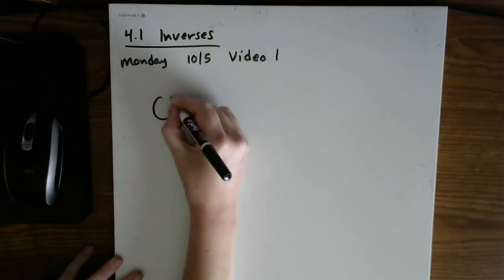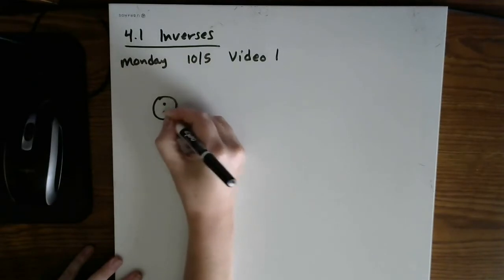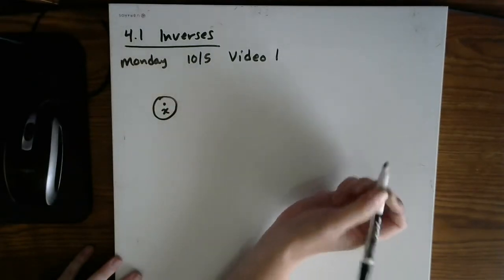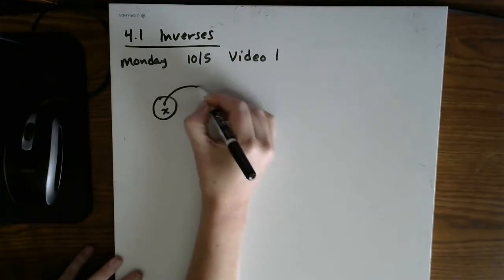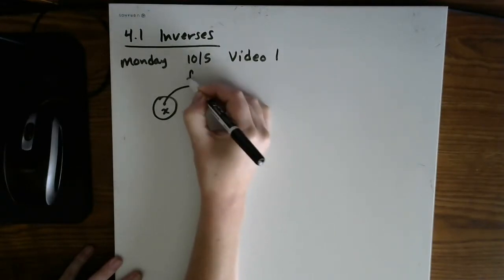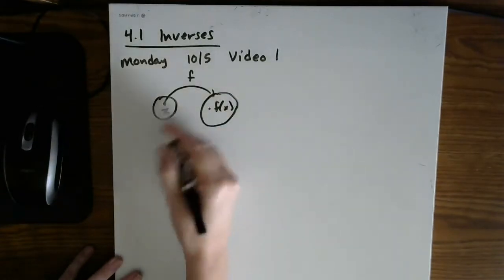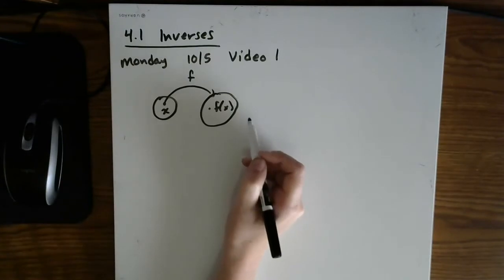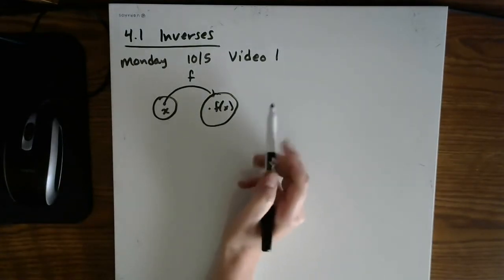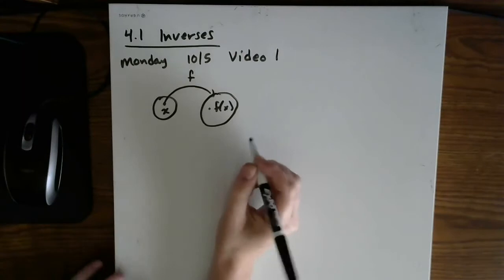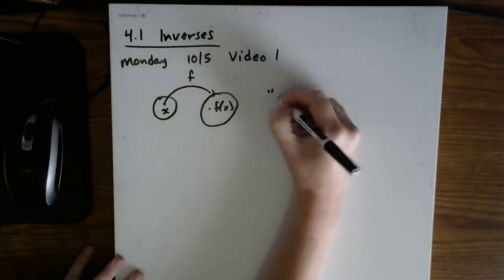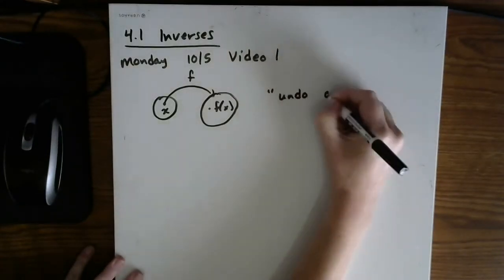So originally we would start with our input or our domain values x, then we'd run them through a function f and out we would get f of x. So we're all really comfortable now after chapter two with this function notation. Now what inverses do is they undo the original function.